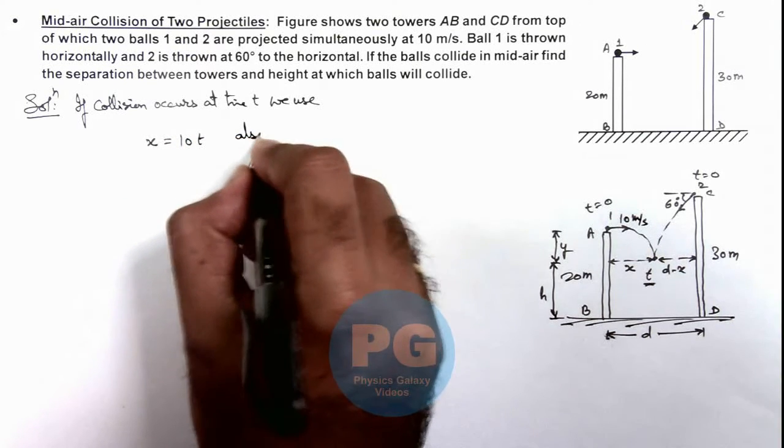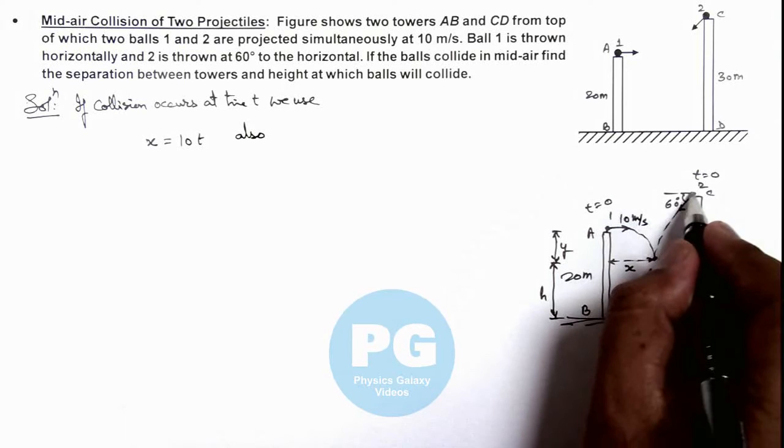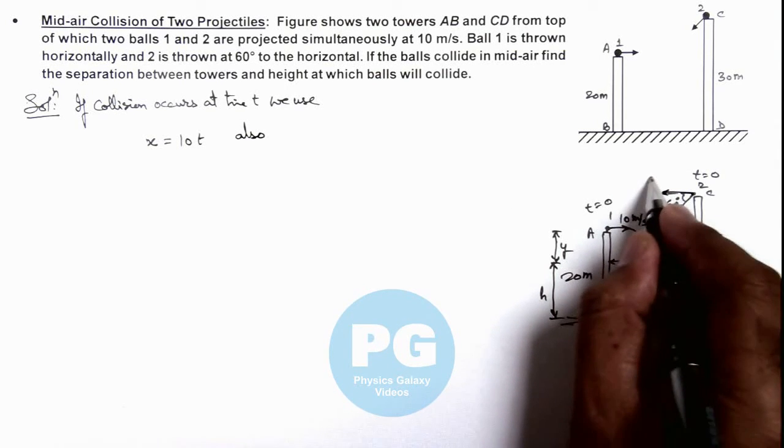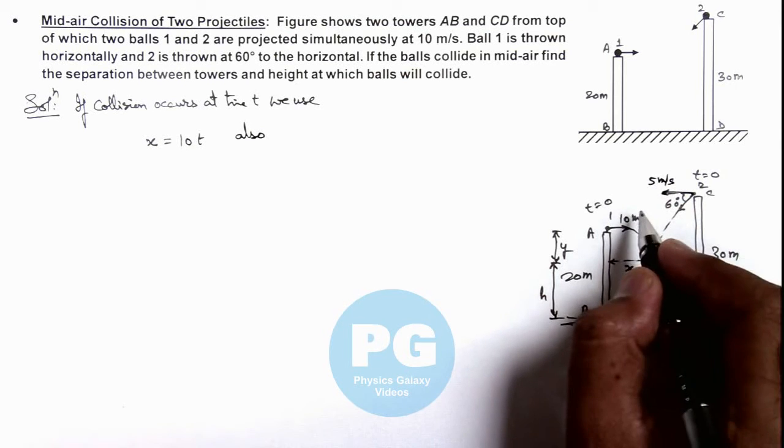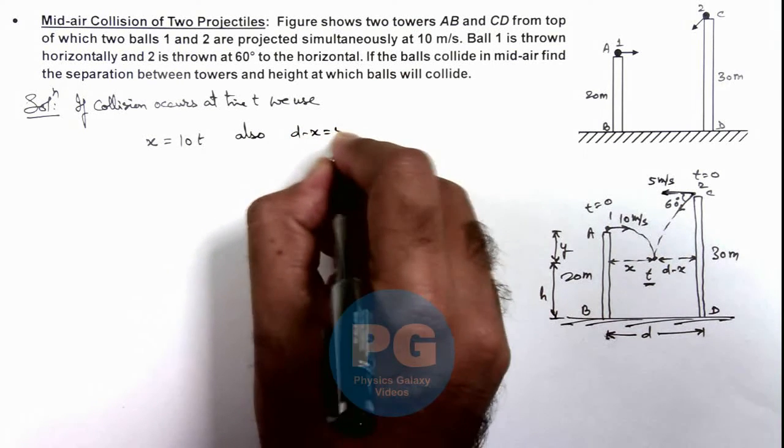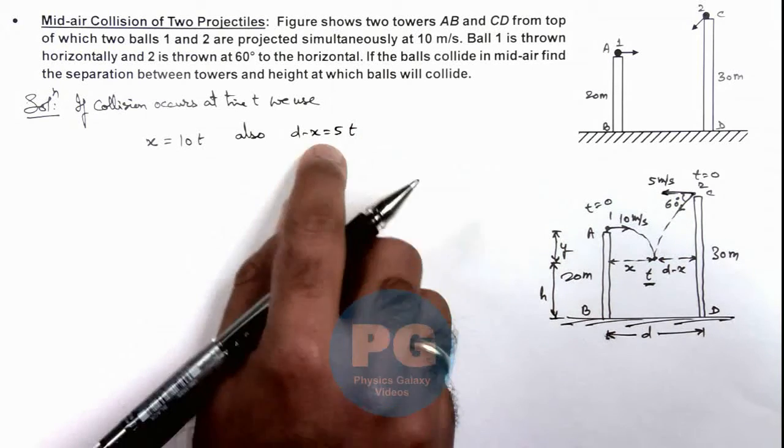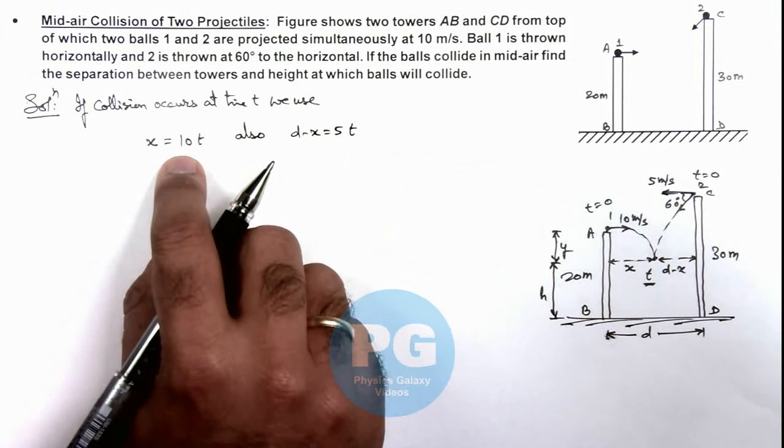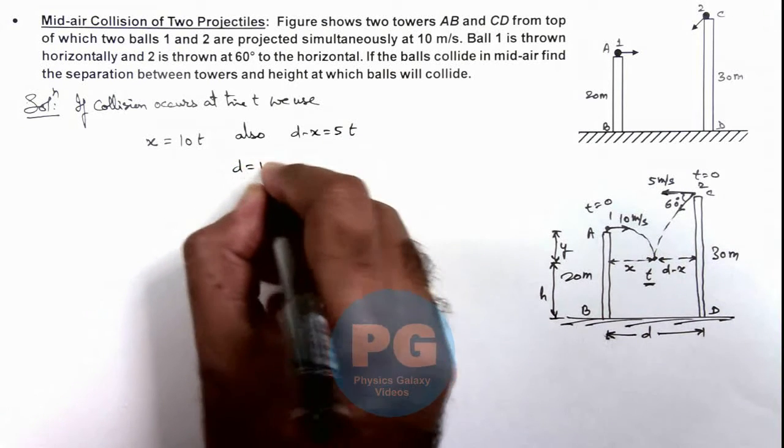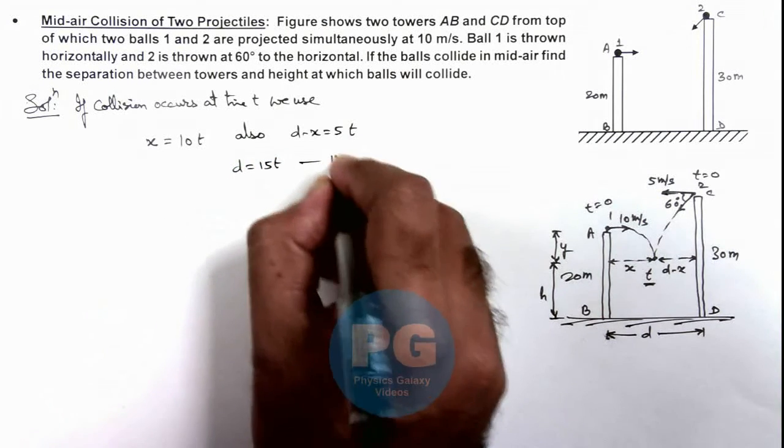Also we can write for the other ball which is moving in horizontal direction with 10 cos 60 degrees, that is 5 meters per second. So here we can write d minus x equals 5t. From these two relations, if we substitute the value of x, this will result in d equals 15t. This is our first equation.